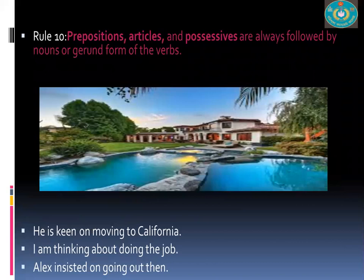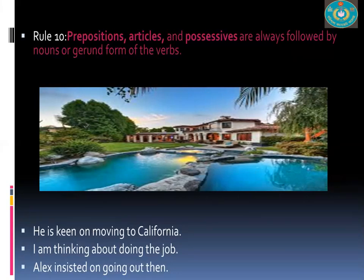Prepositions, articles, and positives are always followed by nouns or the gerund form of verbs. 'He is keen on moving to California and thinking about doing the job.' 'Alex insisted on going out then.' After a preposition, you will have either a gerund or a noun — not a base verb form.